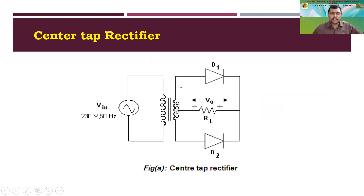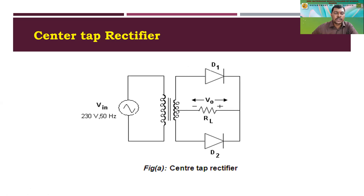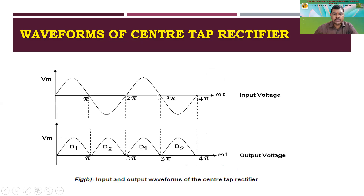The secondary is labeled as S1, S, and S2, so the secondary has center tapping. We are measuring the voltage with respect to the central terminal S. This full wave rectifier employs two diodes. One diode remains in forward bias during the positive half and the other diode conducts during the negative half, so the whole wave is being rectified — that is why it is called the full wave center tap rectifier circuit.